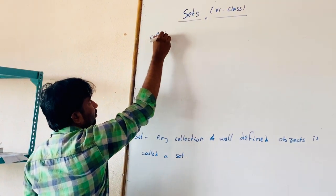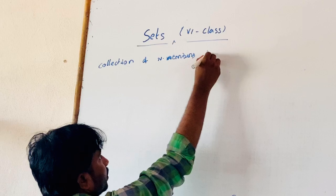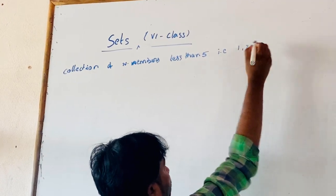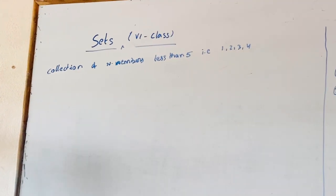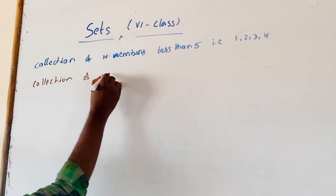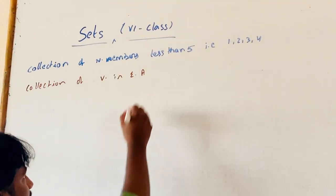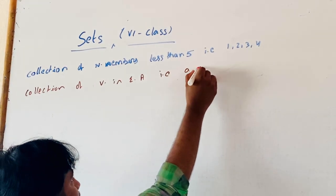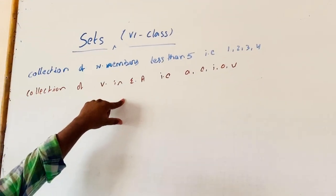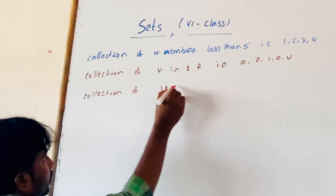the collection of natural numbers less than 5, that is 1, 2, 3, 4. And also, the collection of vowels in an English alphabet, that is A, E, I, O, U. And also, the collection of 9th class students.